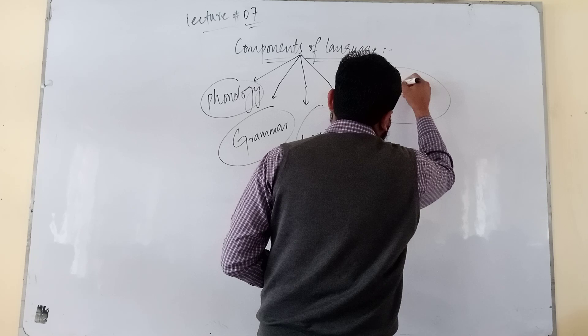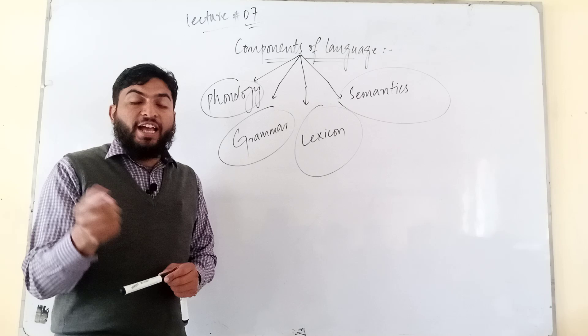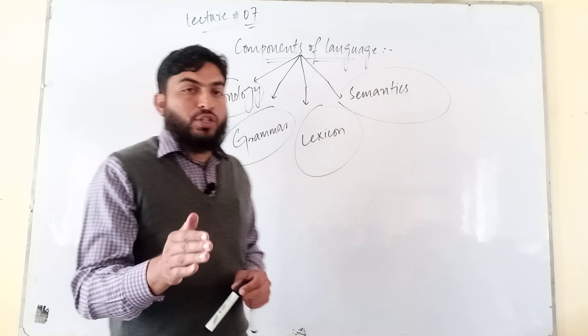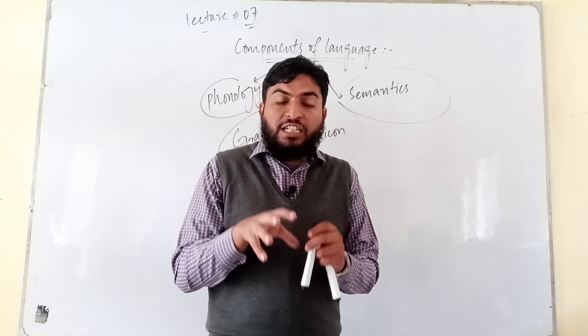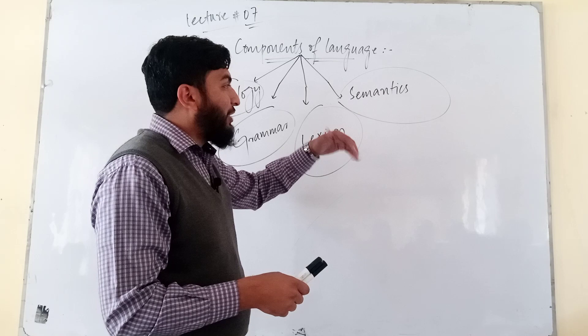Now, these are four components, but three of them are basic. They are basic because they do not change. When a component changes from person to person, from place to place, from area to area, from environment to environment, then we cannot call it a basic component. The three basic components are phonology, grammar, and lexicon.